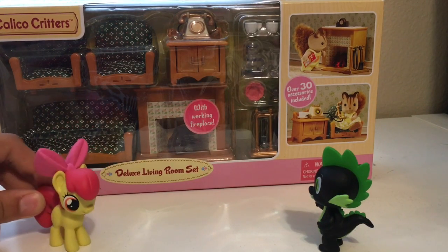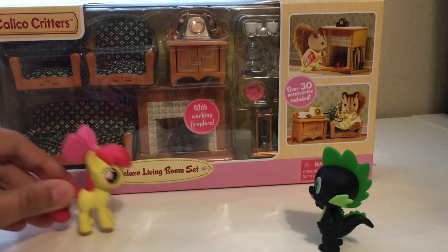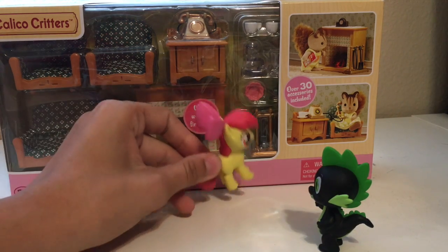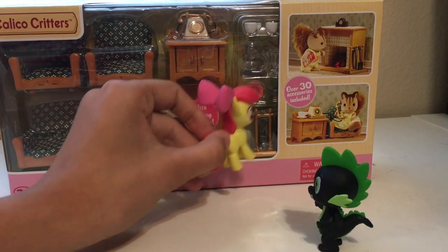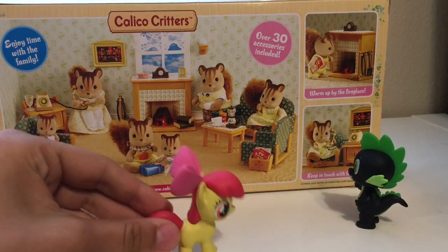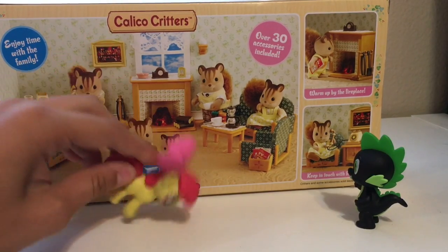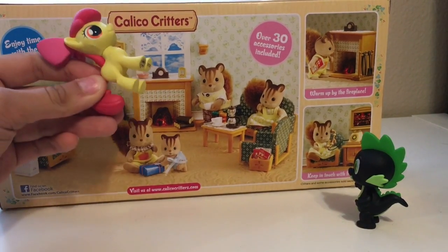So it's the deluxe living room set as we've said before. There seems that there's two chairs, couch, fireplace. There's a bunch of little things over here. Can't see everything. The whole family in their beautiful living room. The window not included. Sadly the window is not included. It's a beautiful window.